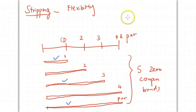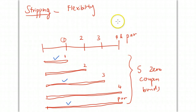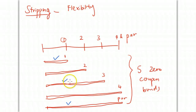Stripping is normally performed by the central depository, which breaks the security into zero coupon bonds and delivers them back — or sells them back — to the investor. It is normally used in government bonds.